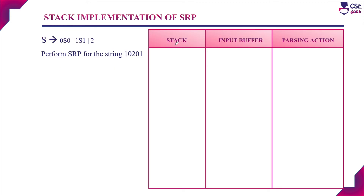We can implement the shift reduce parsing technique with the help of the stack and the input buffer. Initially, the stack contains the dollar symbol and the input buffer contains the input string 1 0 2 0 1. The end of the input string always contains the dollar symbol which represents the end marker. Initially, the input pointer points to the first element in the input buffer. In every step we will push one element into the stack until a proper handle appears on the top of the stack. Whenever a proper handle appears on the top of the stack, we implement the given production rule to reduce the handle.